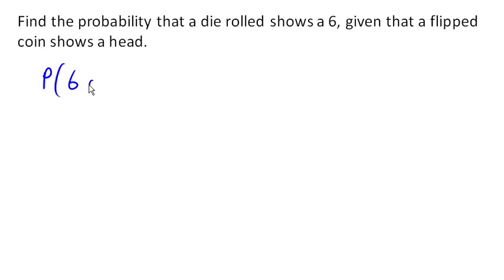given that a flipped coin shows a head. So this is the probability of a 6 on a die, given head on a coin. Now in this case, we need to ask ourselves, are these two events independent? And the answer is yes.